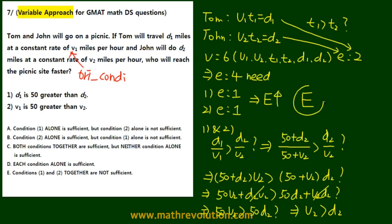We still can't figure it out because we don't know either v2 or d2. That's why E is going to be the answer according to the variable approach method, which is currently the most recognized and efficient way of solving GMAT math problems.